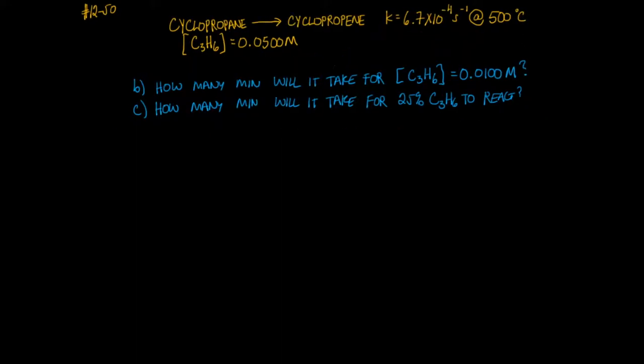This is a continuation of problem 50. We already figured out part A and here we're working on part B. Again, we're given this reaction. We're given the initial concentration of C3H6 and we're given this rate constant. As well as knowing this from the units, they also tell us that the reaction is first order.